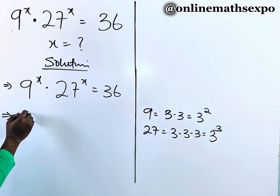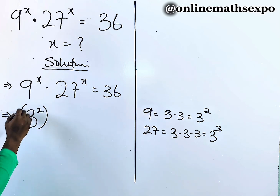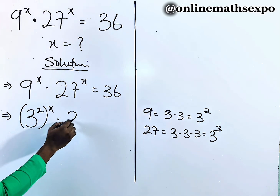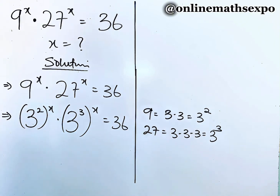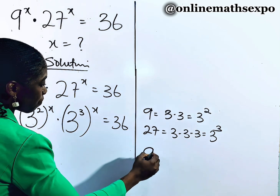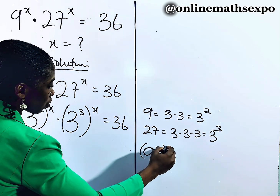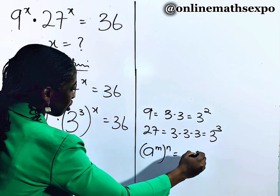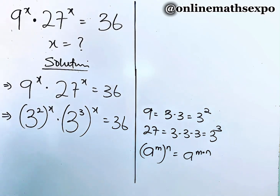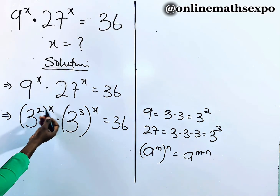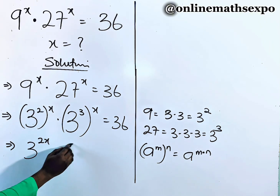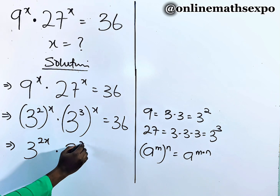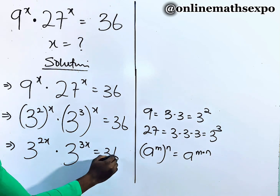So we're going to have: 3 squared raised to the power of x, multiplied by 3 cubed raised to the power of x, equal to 36. Now remember, for every a to the power of m, raised to the power of n, it equals a to the power of m multiplied by n. This gives us 3 to the power of 2x, multiplied by 3 to the power of 3x, equal to 36.